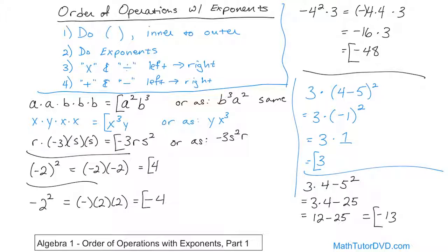The reason I did these two problems is that if you look at them, they have the same numbers and the same exponent — but I get negative thirteen in one and three in the other. The only difference is the parentheses forces things to happen in a different order. So if you have parentheses, you might get a totally different answer than if there are none. Order of operations is really important in algebra. Make sure you understand these, and follow me on to the next lesson, where we'll do more problems with this order of operations concept now that we know about exponents.